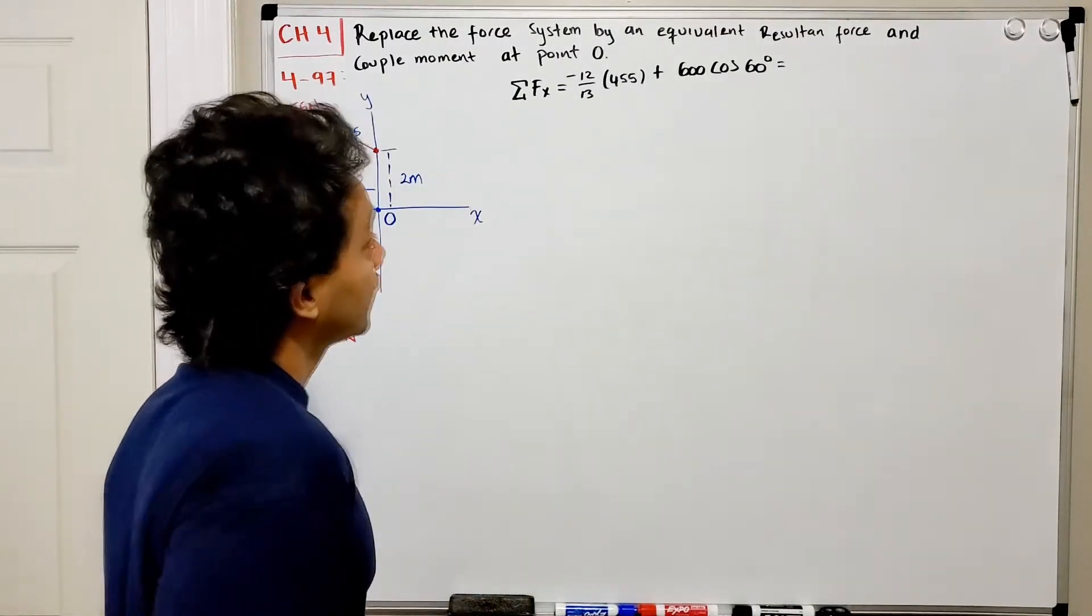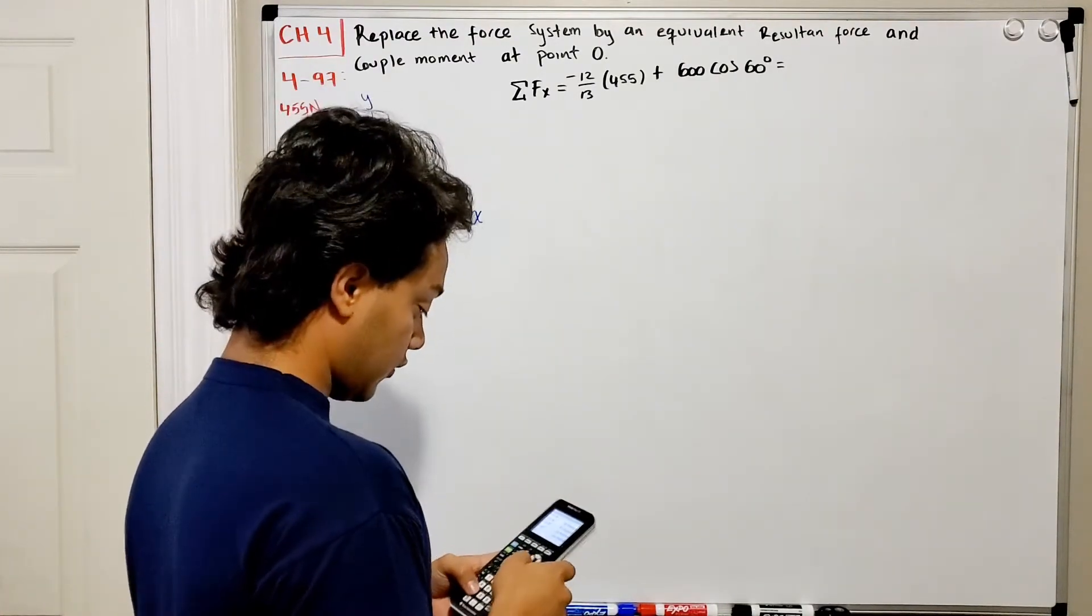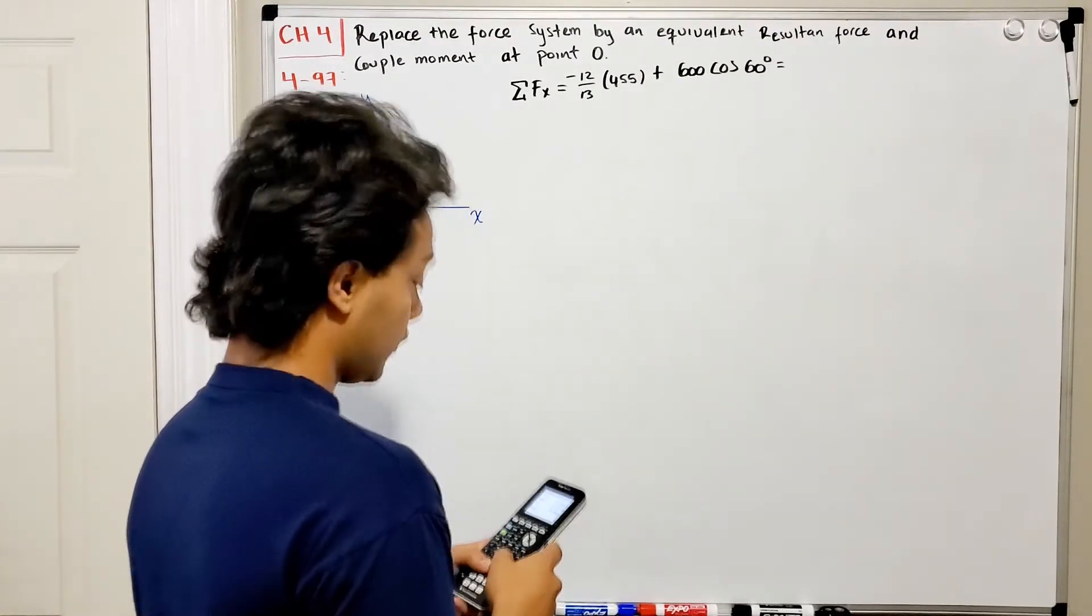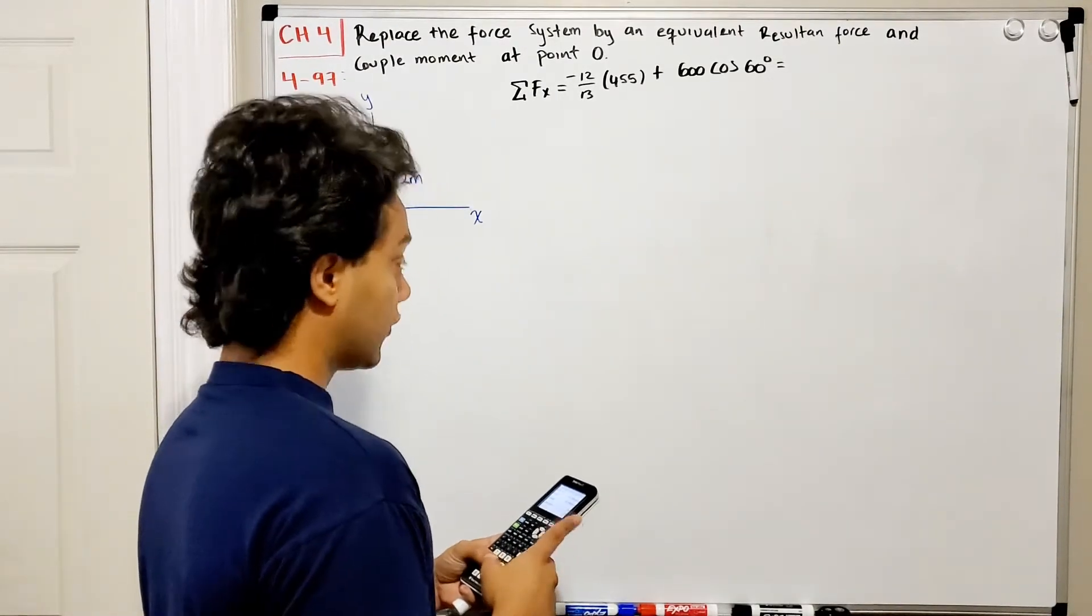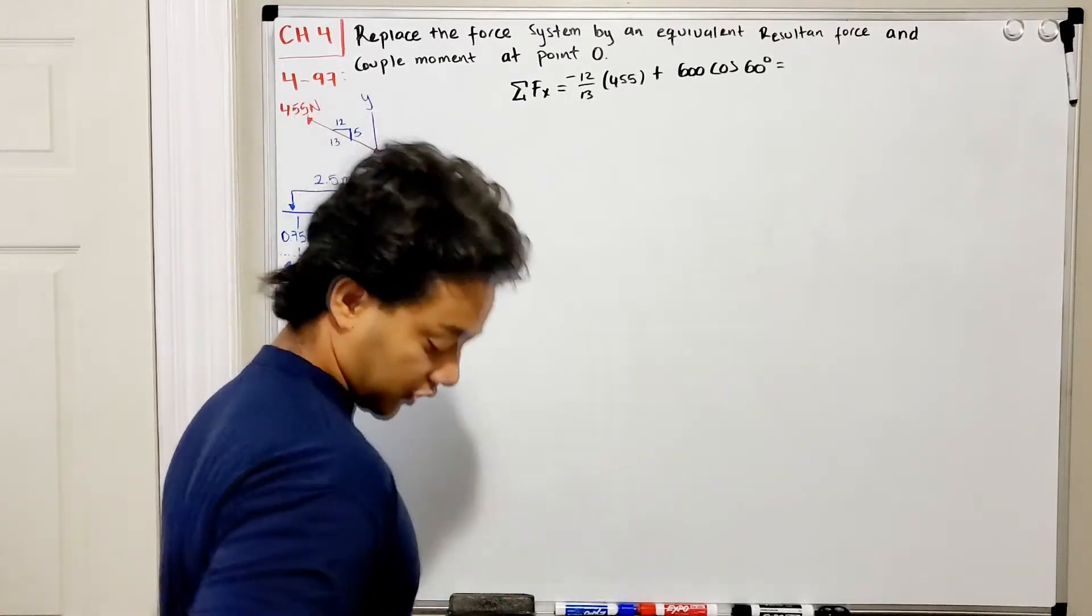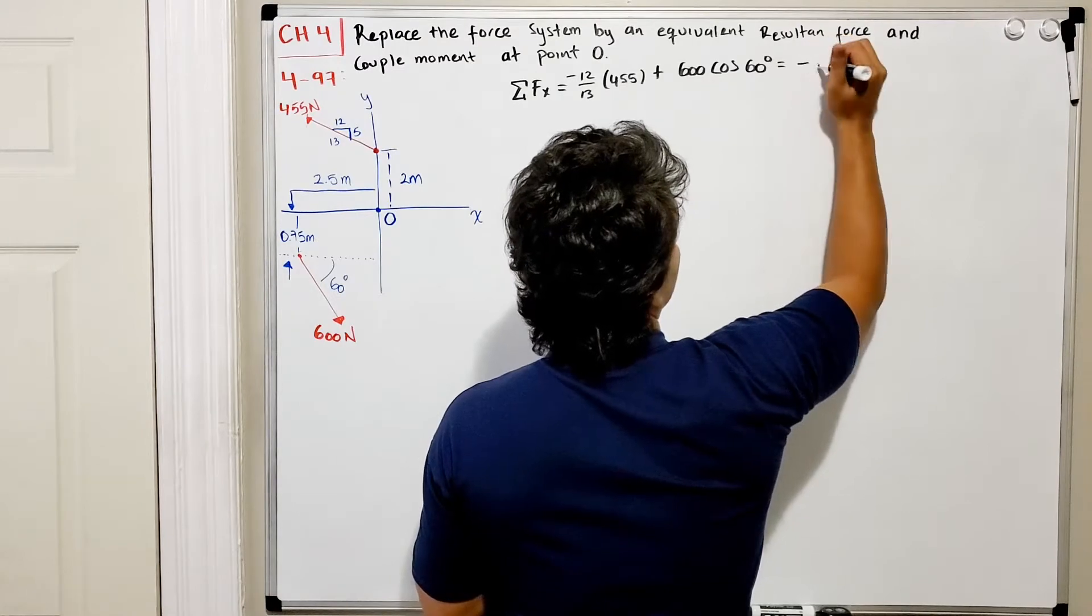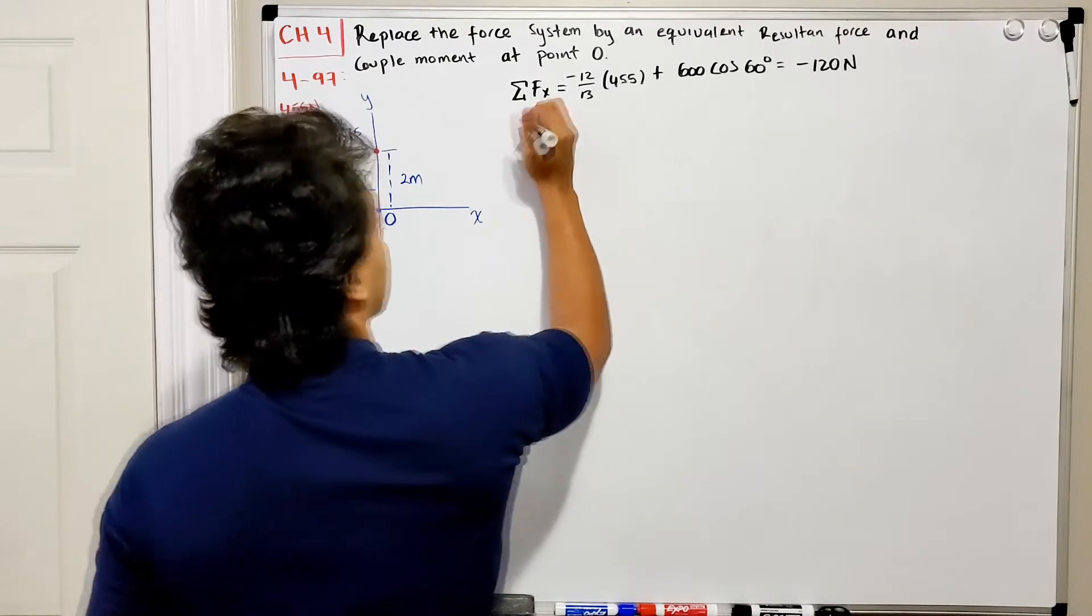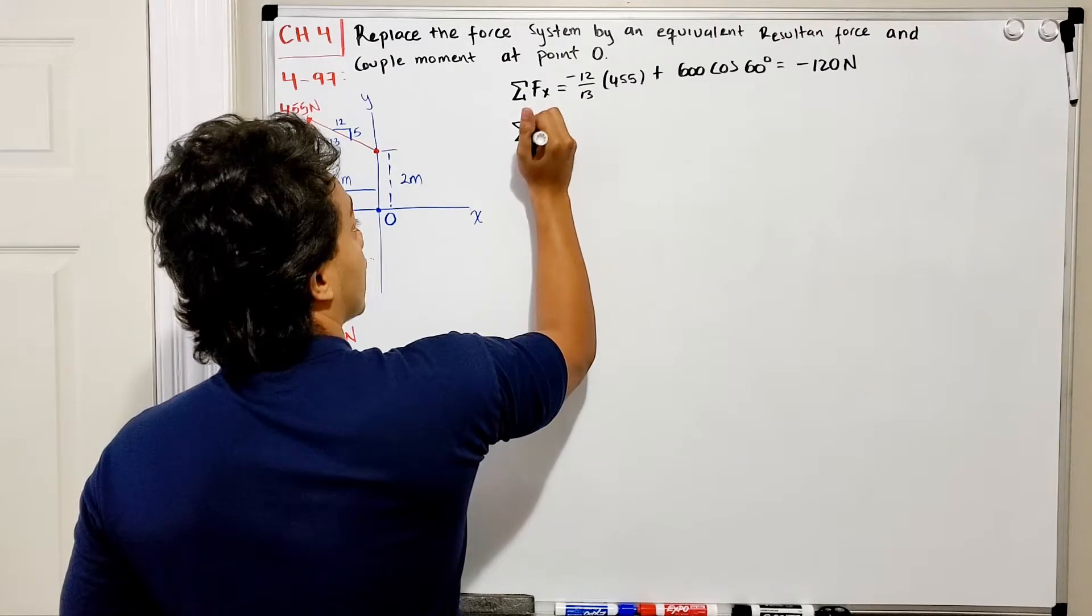If we add this up using our calculator: 12 over 13 multiplied by 455 gives 420, then 600 cosine of 60 gives 300. So negative 420 plus 300 gives negative 120 N going to the left. We're done with the sum of forces in X.